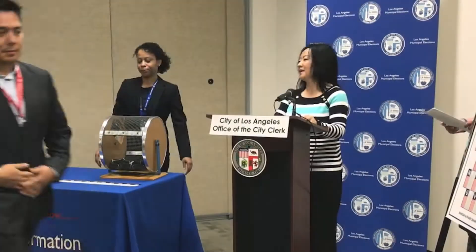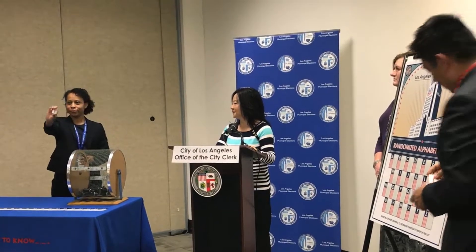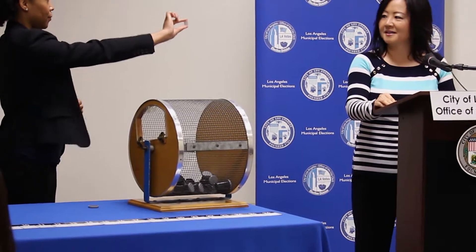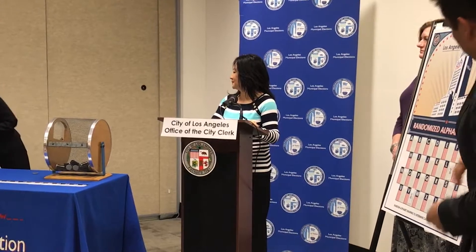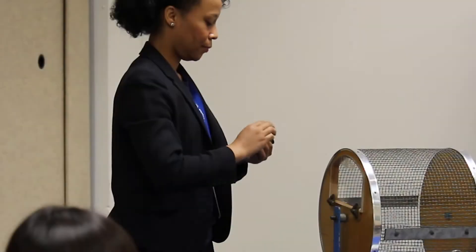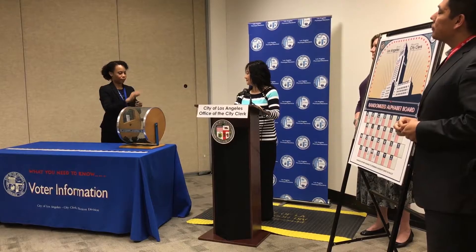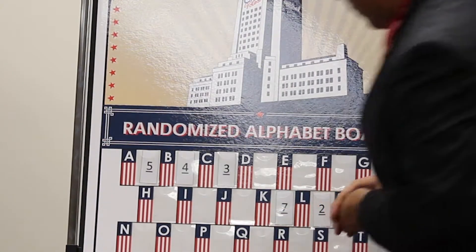We are ready to commence the Random Alpha drawing. The first letter is E. The second letter is L. Then we have C. B. W. K. O.